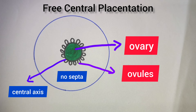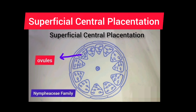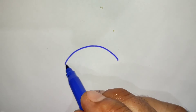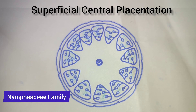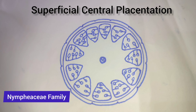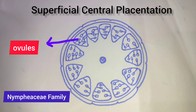Superficial placentation is found in family Nymphaeaceae and Nymphaea. It is present in a multilocular ovary where the ovules arise from the surface of the septa. In this multilocular ovary, the ovules arise from the septa, which is characteristic of family Nymphaeaceae.